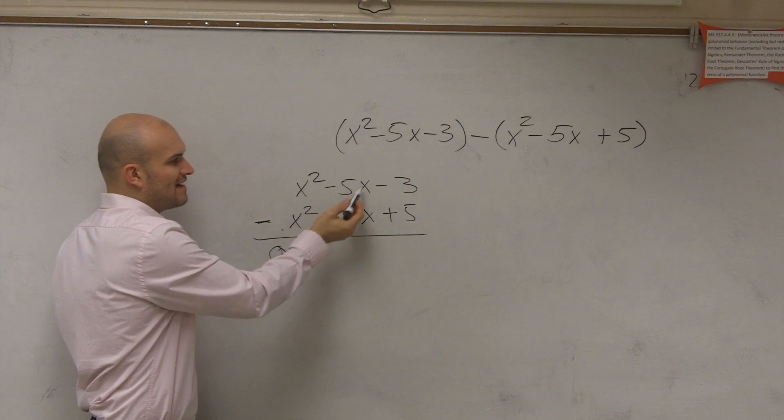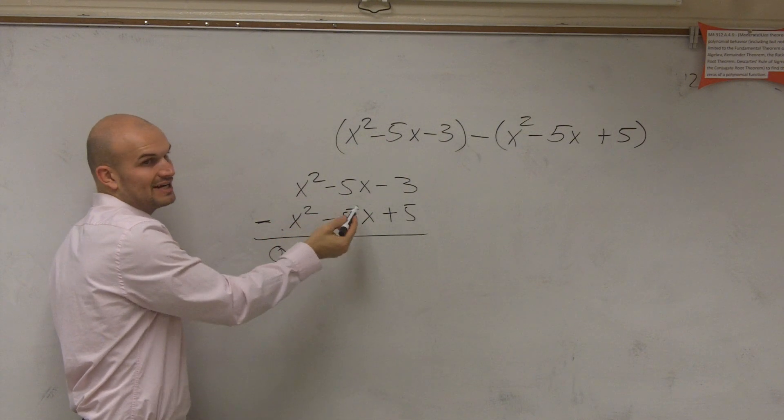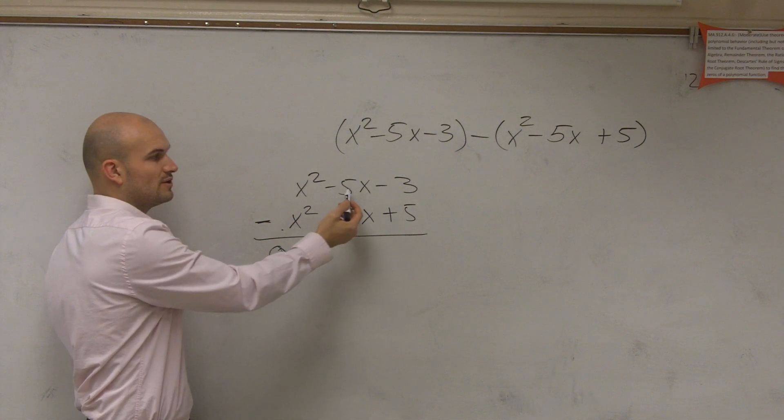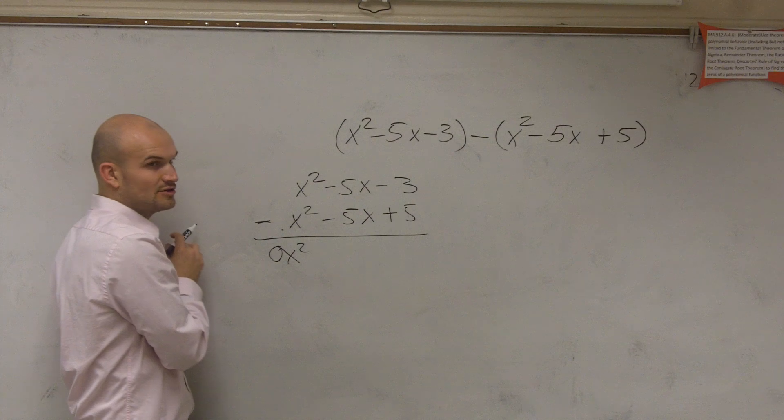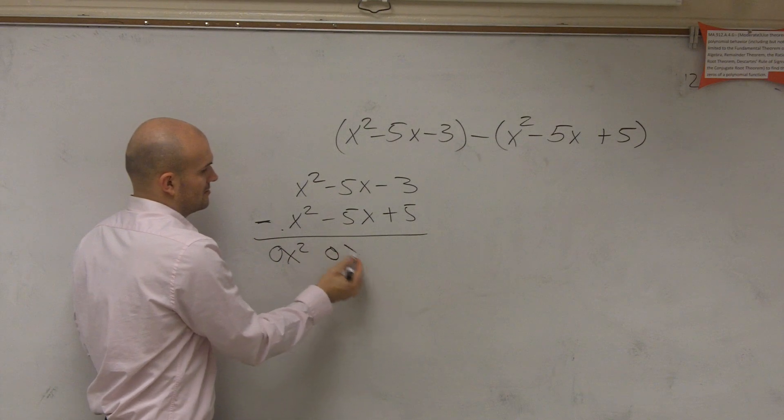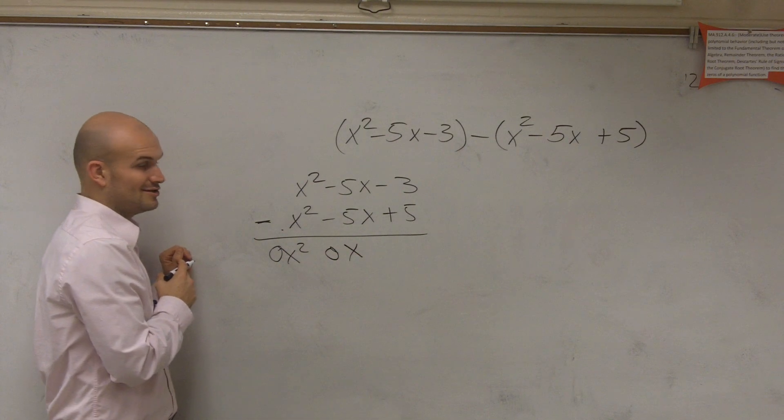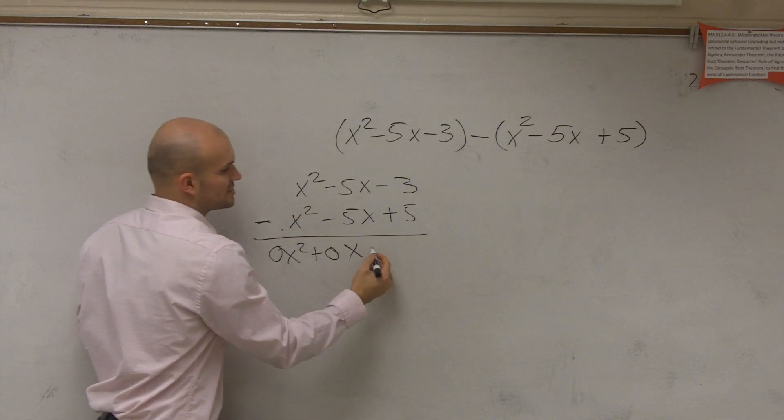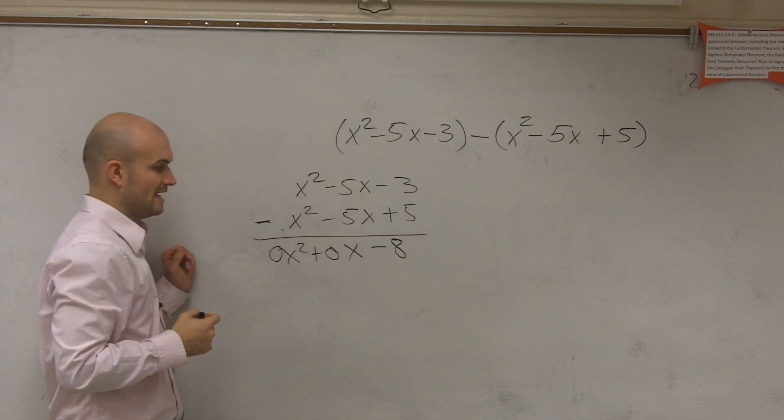So now, negative 5x minus negative 5x. Remember, those are double negatives, so it's going to turn to positive. So therefore, negative 5x plus 5x is going to leave us with 0x. And then we have negative 3 minus 5, which is just going to leave us with a negative 8.